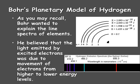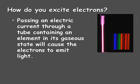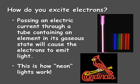As you may recall, Bohr wanted to explain the line spectra of elements, and he believed that the light emitted by excited electrons was due to movement of electrons from higher to lower energy levels. Passing an electric current through a tube containing an element in its gaseous state causes the electrons to become excited, and as they lose the energy from their excited state, that energy gets emitted as light. This is how neon lights work, as we can see in this cardinal sign.